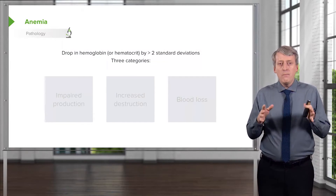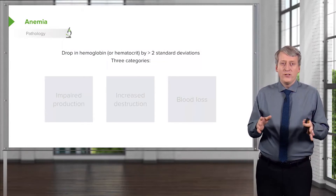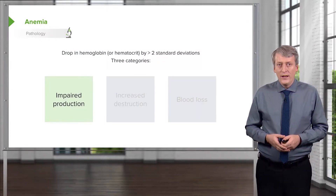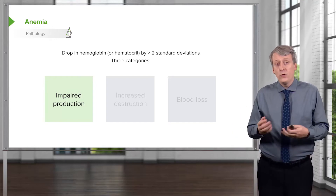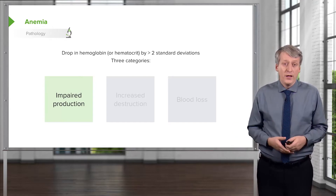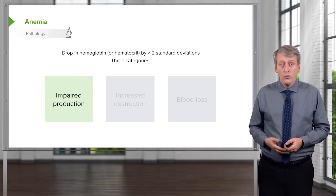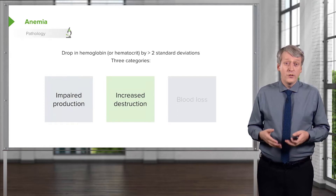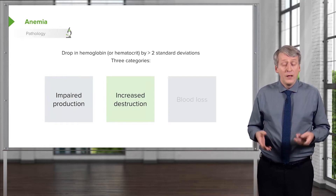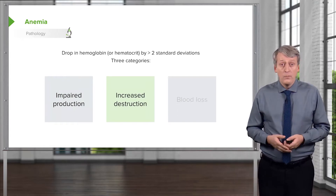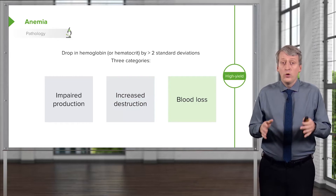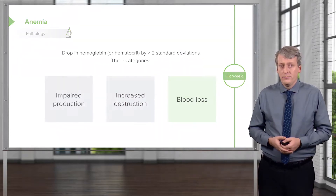There are three major categories of anemia. One is impaired production — if you can't make red blood cells, you'll have fewer of them. Another is increased destruction — if you're destroying them, you'll have fewer of them. And the last is general blood loss.